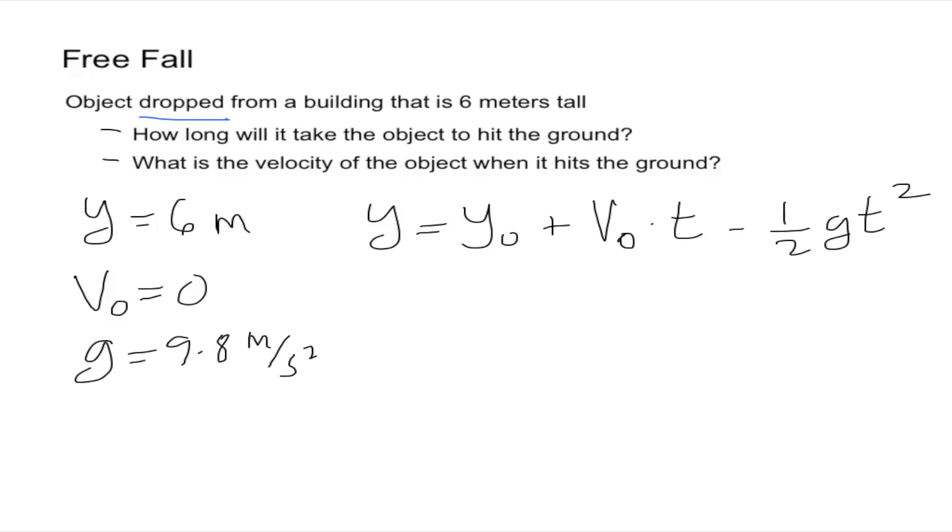We know that the initial velocity is zero which means that all of this will be equal to zero. Then we also know that the initial height y naught is going to be six meters because that's where the object is first when it's dropped and so the final height is going to be zero because that's when the object hits the ground. So we can also cancel this and make it zero.